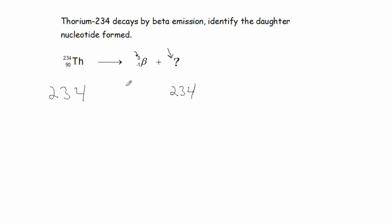So, now we can verify that 0 plus 234 equals 234. And therefore, the superscripts on both sides are balanced.